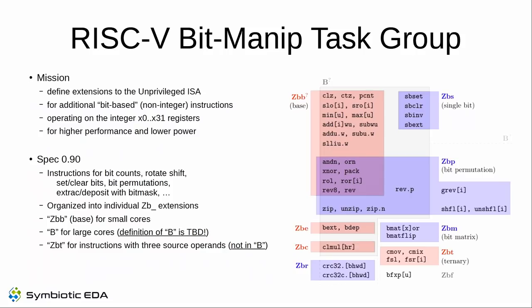I've carefully chosen two suggestions here for what B could look like — and neither will be the final version. This is to drive home the point: we don't know yet what B is. We know which individual instructions we want, and the next step is figuring out which of those constitute B. There is also set Zbb — the orange box in the upper left — a smaller base set for small cores that don't want to implement the full B extension. That's pretty much settled, though some open questions remain.